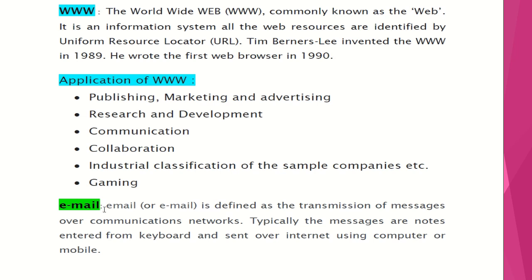Next is email. What is email? The 'e' in email stands for electronic. Email is defined as the transmission of messages over a network communication system. Typically, messages are entered from a keyboard and sent over the internet using a computer or mobile device. It is a medium through which we can type text, attach files, and send them to any person we want.